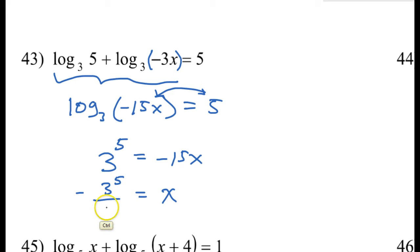Now we might leave it like that. What is 3 to the fifth power? Is that on your chart? 243. So we could write this as negative 243 over 15. Yes, both of these are certainly divisible by 3.